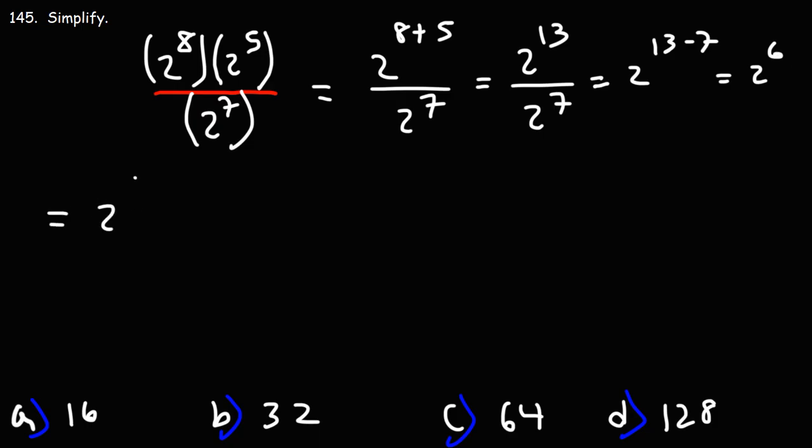So our answer is 2 to the 6, but when we look at our multiple choices, it is not written as a base 2 answer. 2 to the 6, we can write that as 2 to the 3 plus 3, which is 2 to the 3 times 2 to the 3.